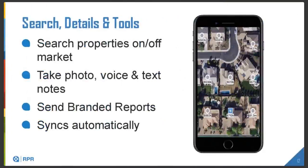On mobile you can do searches, look at property details, and access some tools, but there are some limitations. You can turn property searches on or off — whether on or off market — and the values shown are the RVM. You can take photos and add them to a property, take notes by voice or text, create and send branded reports to clients, create flyers, and the mobile site syncs automatically to your desktop site.